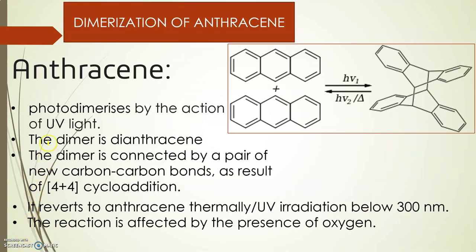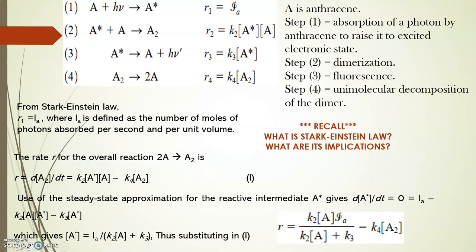Another important photophysical process is the dimerization of anthracene, which is formed by a 4 plus 4 cycloaddition in presence of UV light. There are four processes involved in dimerization of anthracene. What are those four processes? What are the mechanisms?